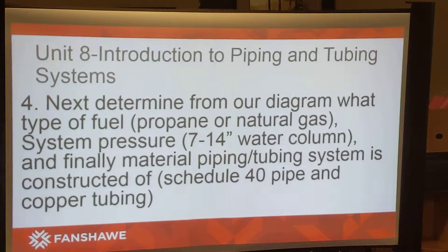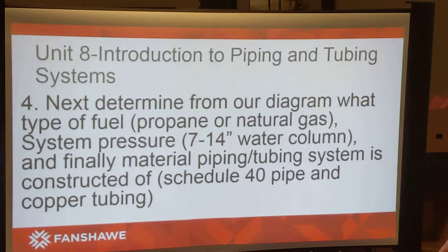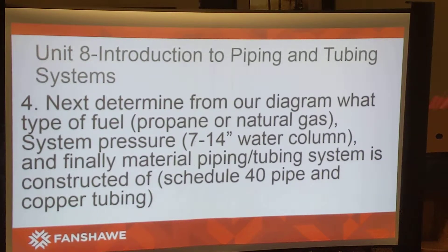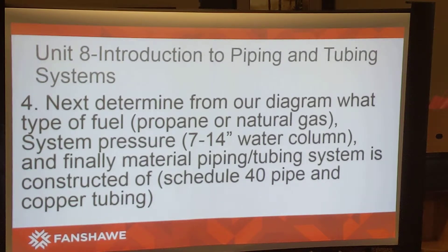Next, from our diagram we're going to determine what type of fuel we're going to be using. We're using natural gas, but it could be propane — in that case we'd use the Annex B tables. In our case we're using natural gas so it's Annex A. The system pressure is seven inches water column, and the material is both schedule 40 pipe and copper tubing.